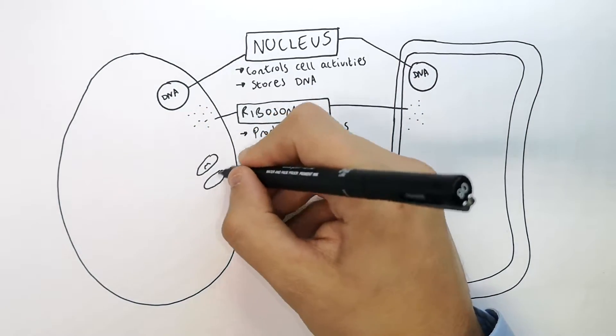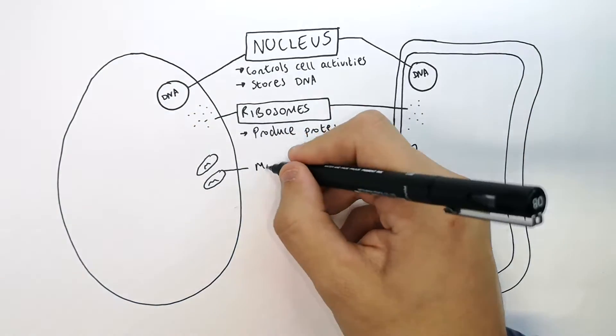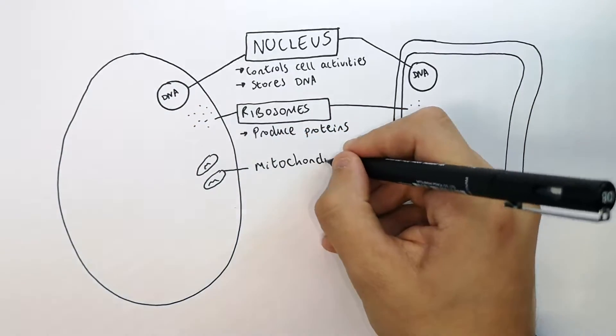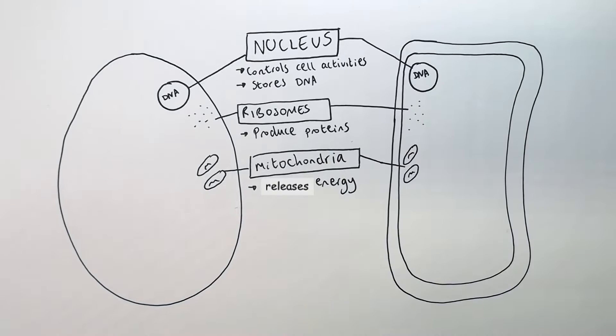Next is mitochondria. The mitochondria are organelles of the cell that release energy.